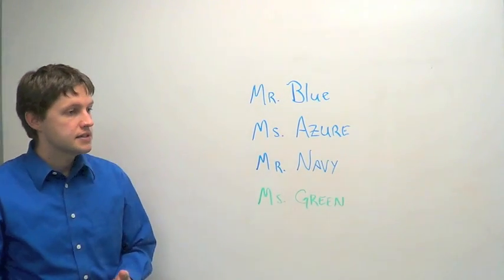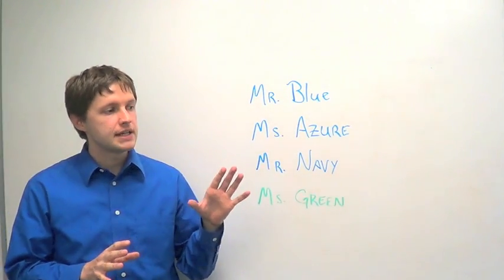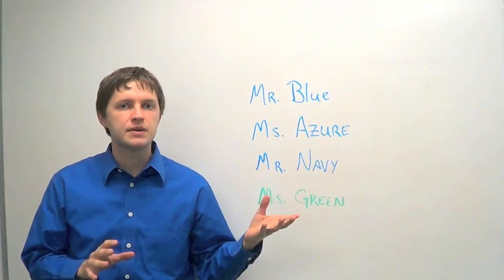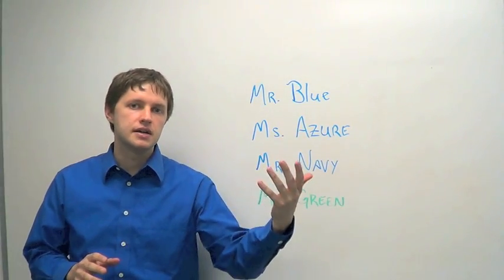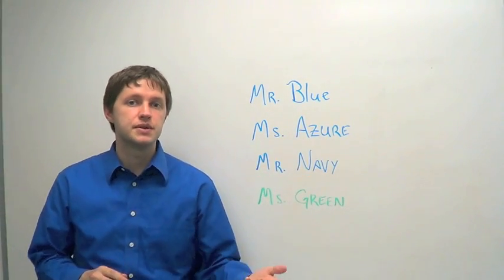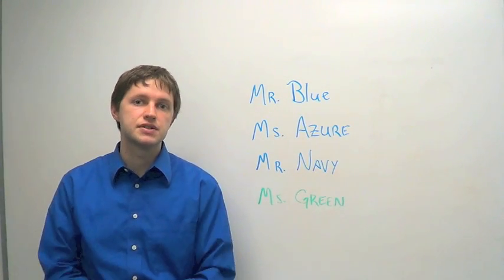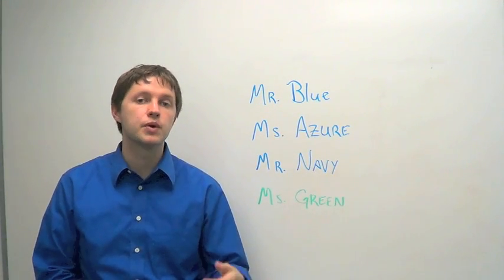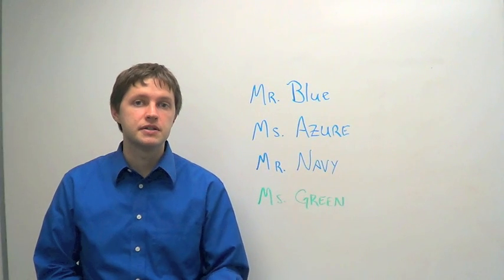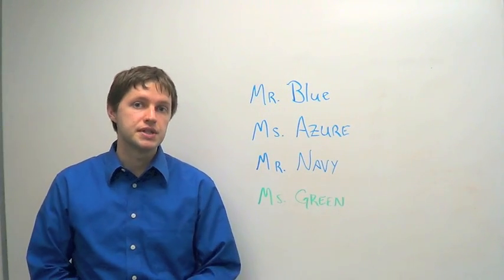So this is electing multiple candidates at the same time. Many city councils, for example, will elect several candidates at once. There are also a number of states that use multi-seat districts for their state legislature. For example, if you live in Arizona or Maryland or New Hampshire, you might live in a district that elects more than one person.